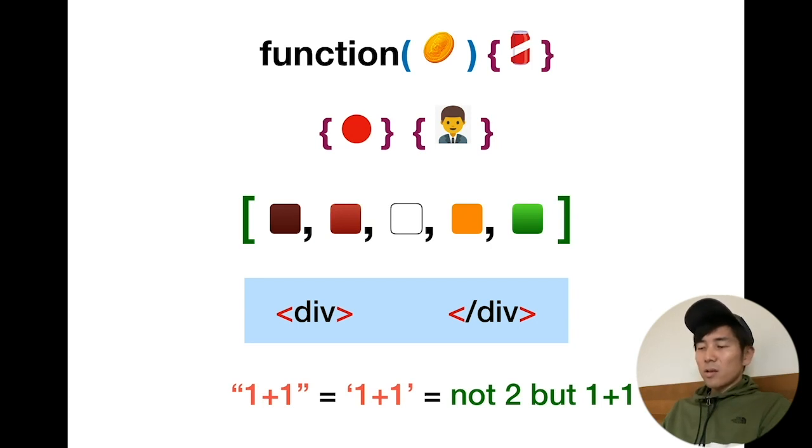And finally, quotations - a way to convert that value into a literal string. So 1+1 with quotation will not be 2, but instead it will just be 1+1.